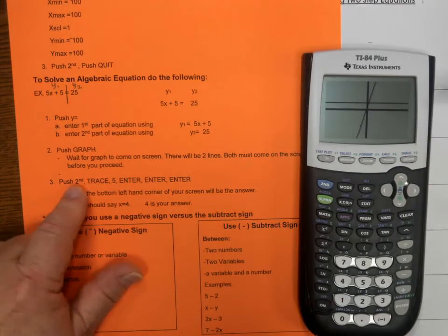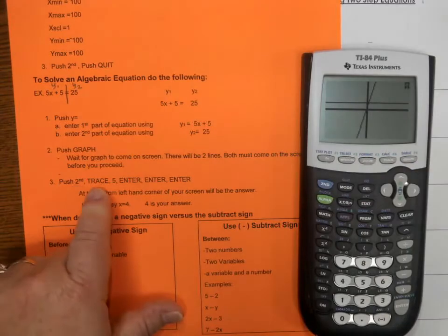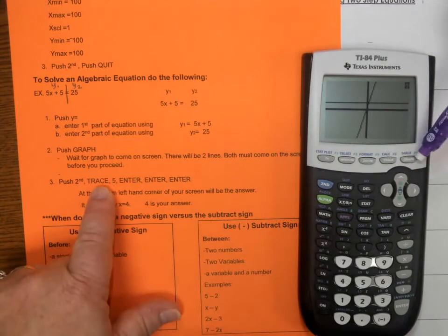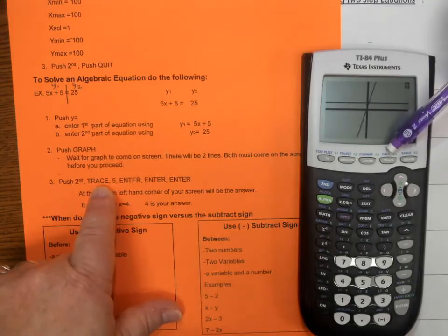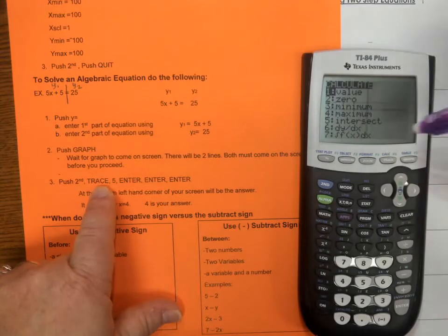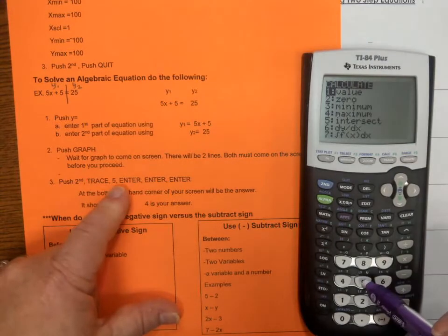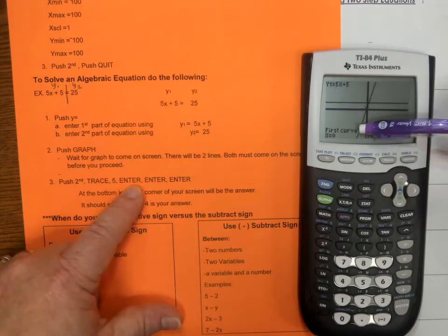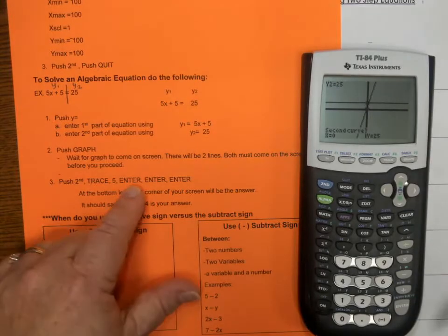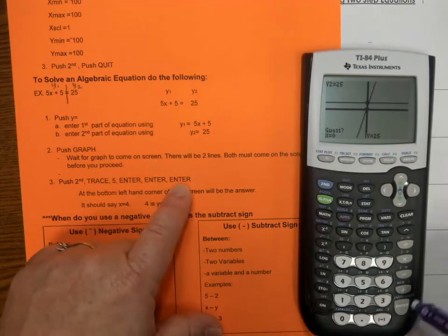Then it says push second. Here's my second key, that blue button. Trace, which is right here next to my graph. It's under calculate because you're actually calculating. That's why you push the second button. Then it says we want the intersection. So, we're going to press five. And then it says first curve, we're going to hit enter. Second curve, we're going to hit enter. And then guess, we're going to hit enter.